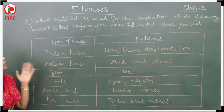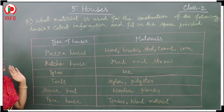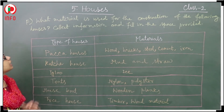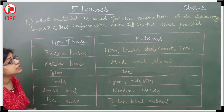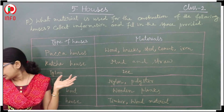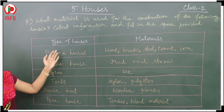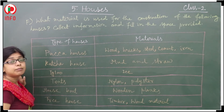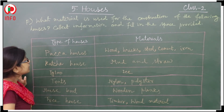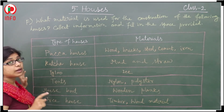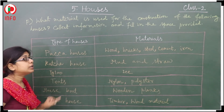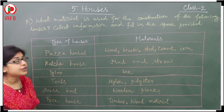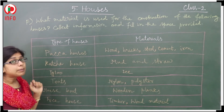Now for further discussion: what material is used for the construction of the following houses? Collect information and fill in the space provided. The paka house is made of wood, bricks, steel, cement, and iron — these are the raw materials for the paka house. The kutcha house is made of mud and straw.